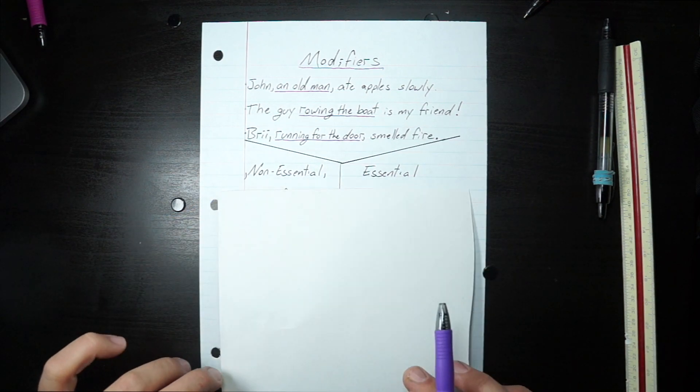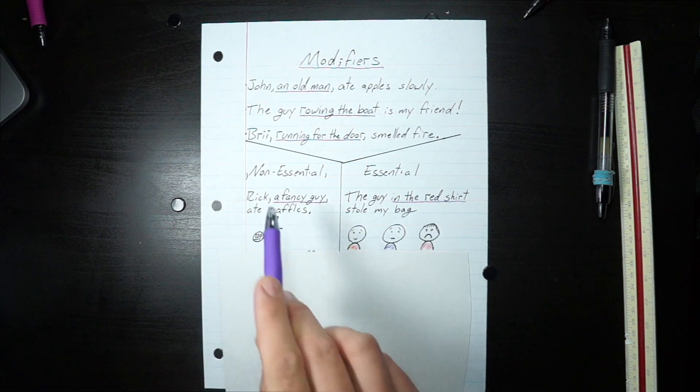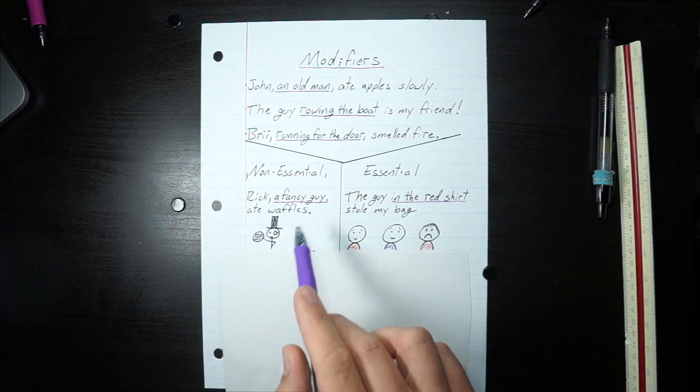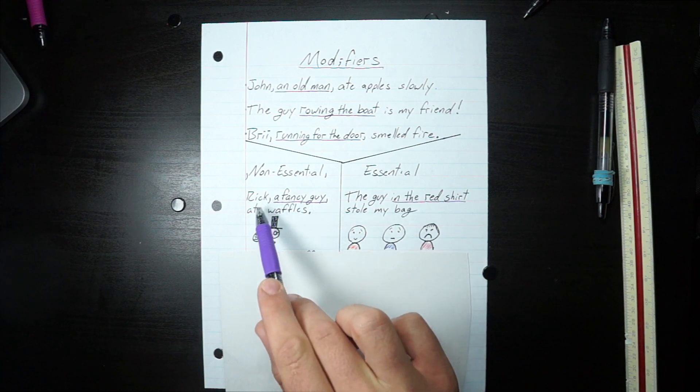So let's look at some examples of non-essential and essential modifiers. So check this out. Rick, a fancy guy, ate waffles. That's Rick right there. A fancy guy is the modifier surrounded by commas, right?